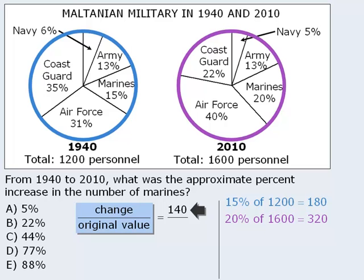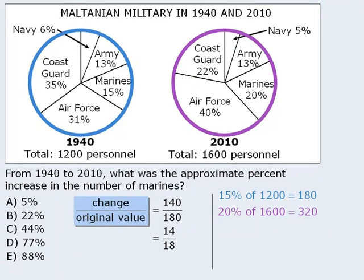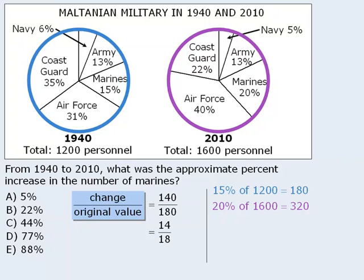The original number of Marines in 1940 is 180. All we need to do is convert the fraction 140/180 to a percent. We can simplify it by dividing top and bottom by 10 to get 14 over 18, then divide by 2 to get 7 ninths. Since 1 ninth equals approximately 11%, 7 ninths equals approximately 77%, which means the correct answer is D.